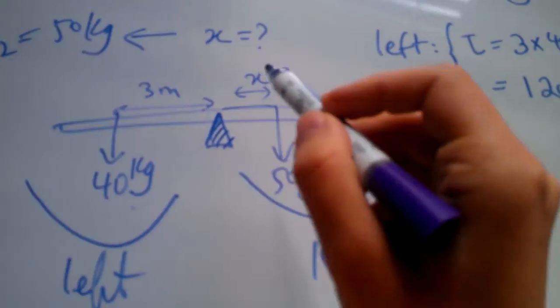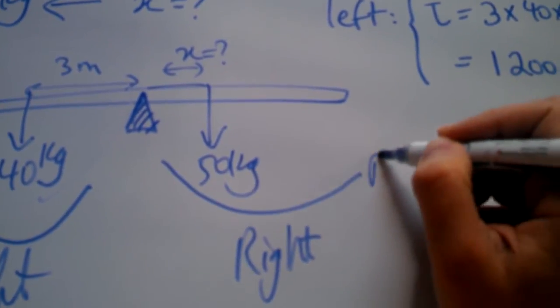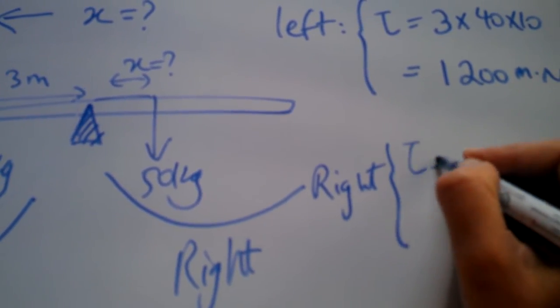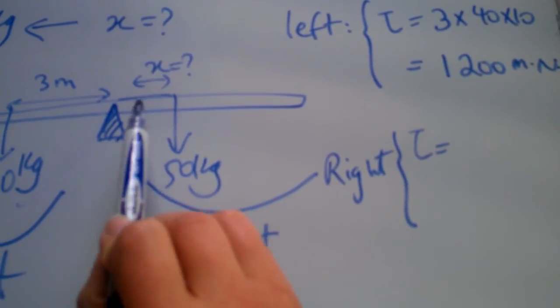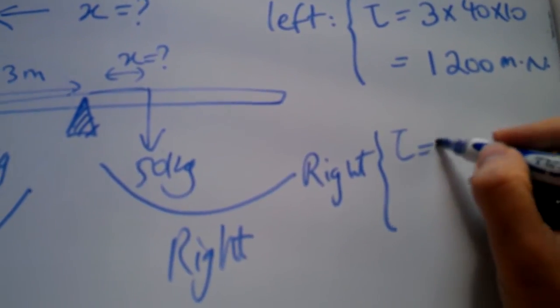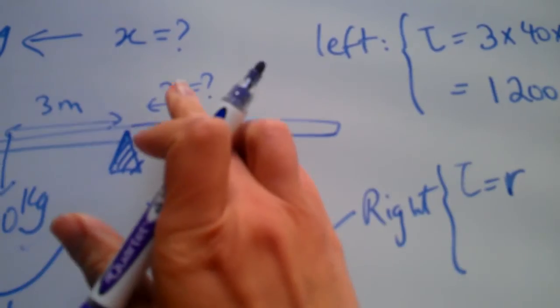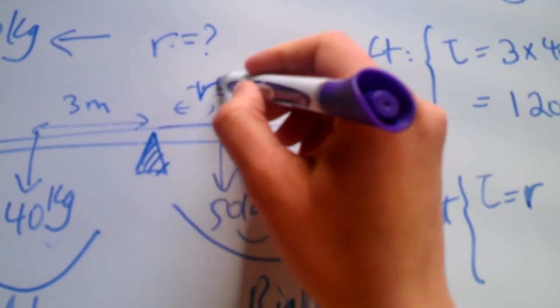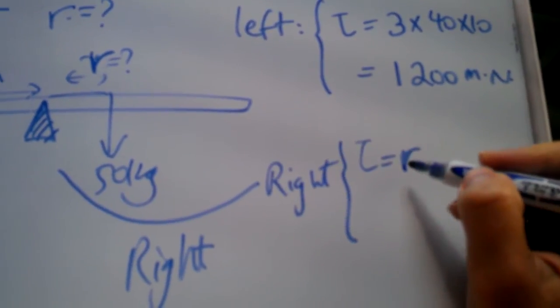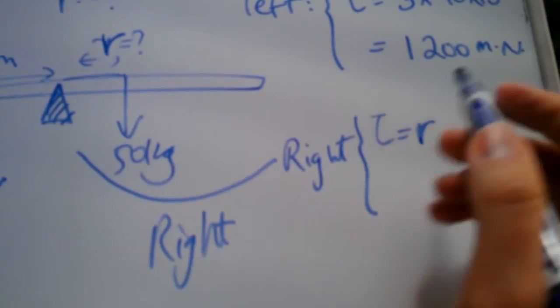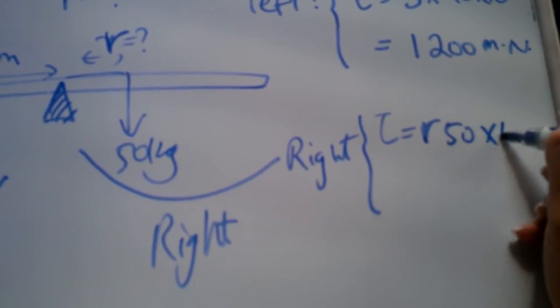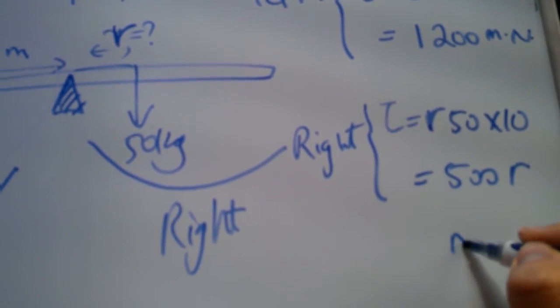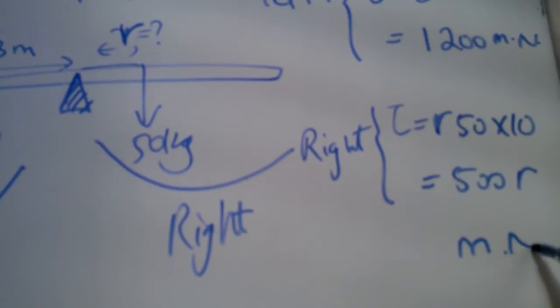Now on the right hand side what we have is essentially the distance that we are solving for. We don't know what that distance is, x or r, whichever you want to call it. Some distance that you're solving for times 50 times 10, and that gives you 500r meter-newtons.